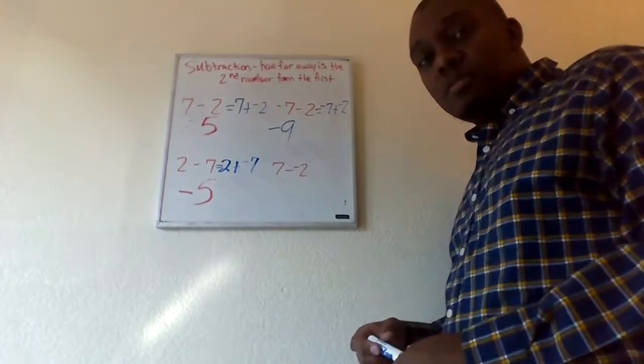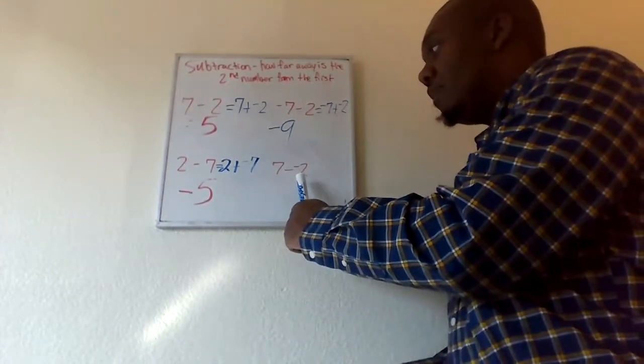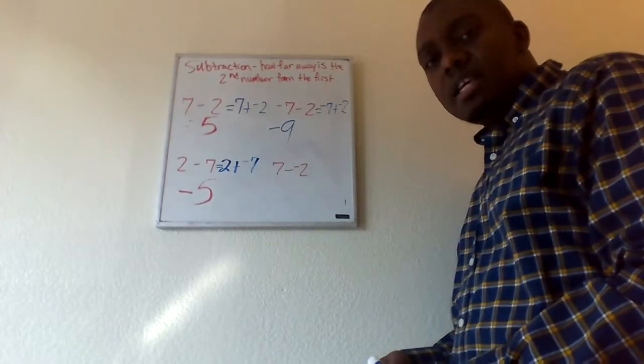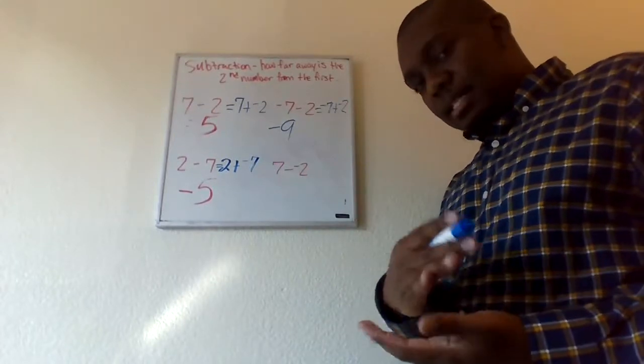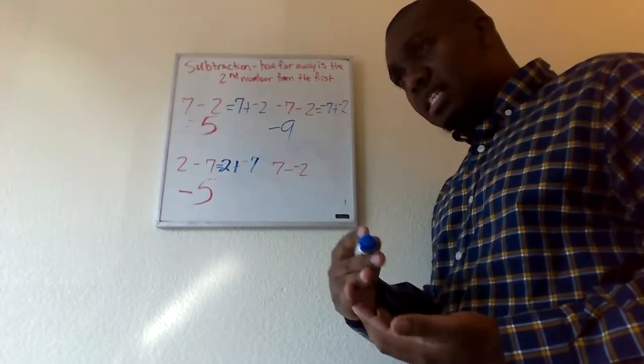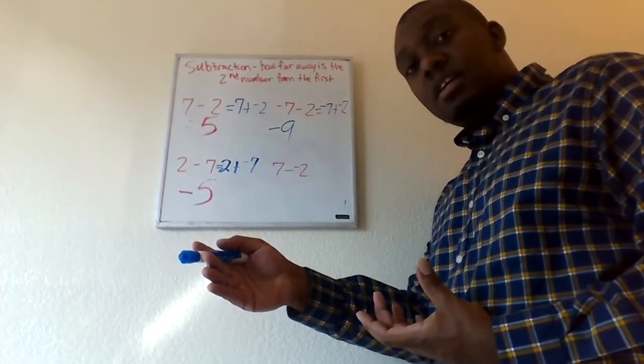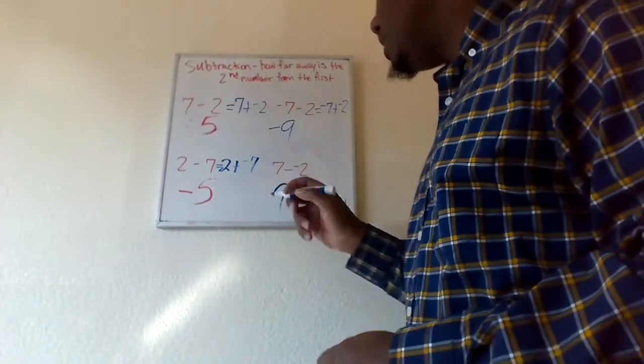Okay. Seven minus negative two. In other words, how far is negative two away from seven? Well, if I start at negative two to get back to zero, that's two. Then to get from zero to seven, I think that's seven more. So, two plus seven, and we're moving up doing this, that's going to be a nine, a positive nine.